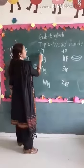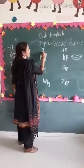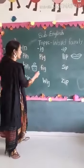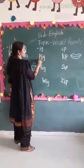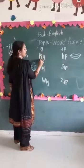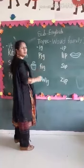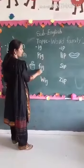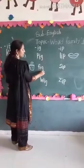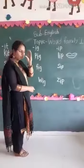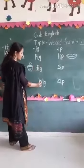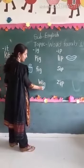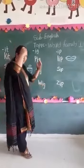Next, the '-IG' word family. First word: P-I-G, 'pig'. Then F-I-G, 'fig' — fig is a food.